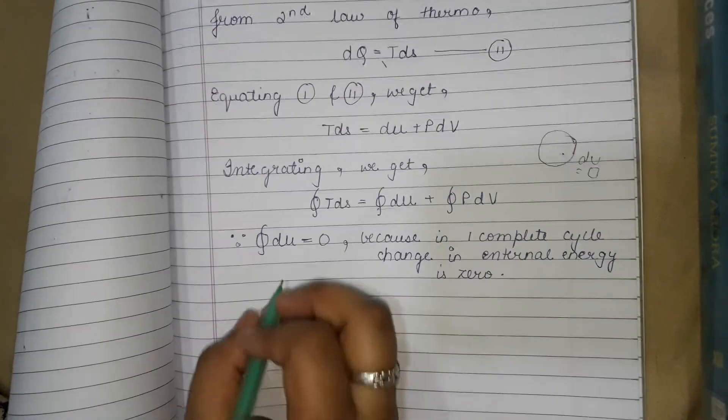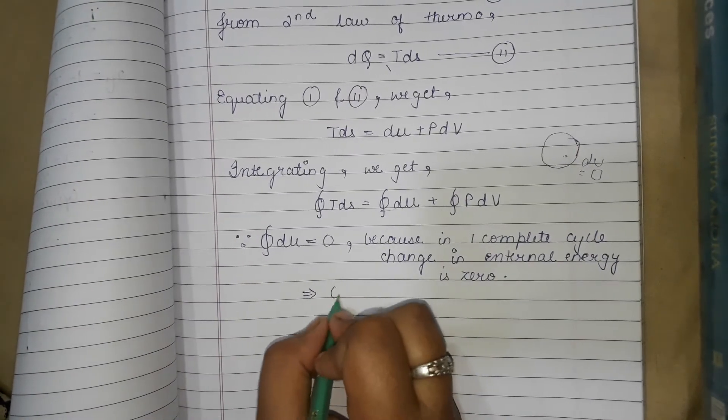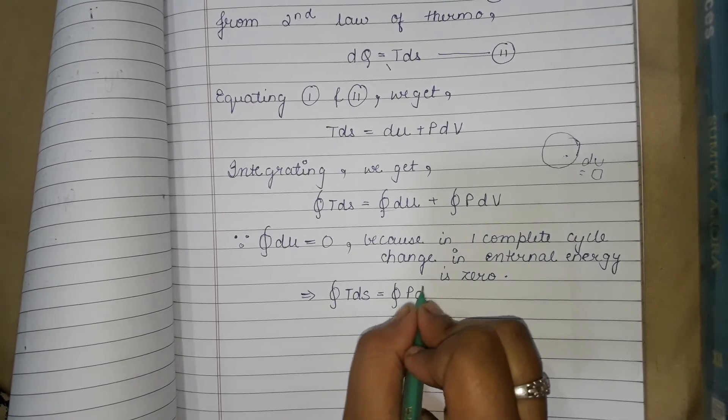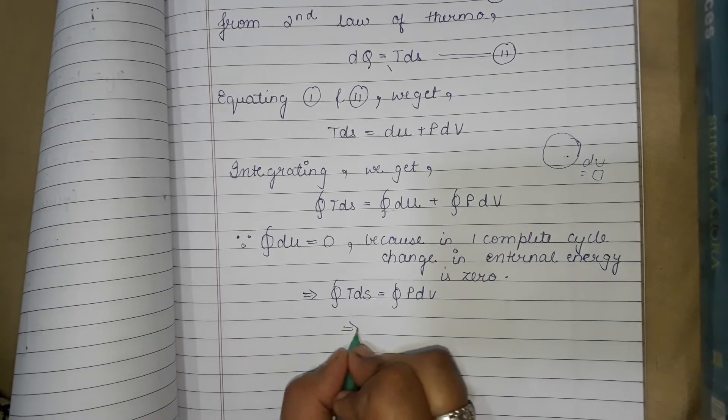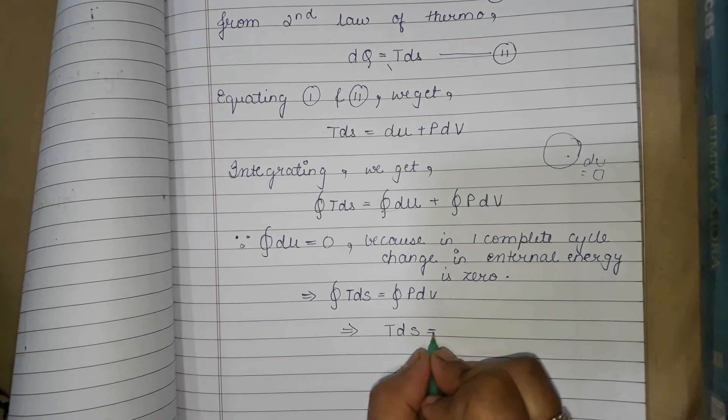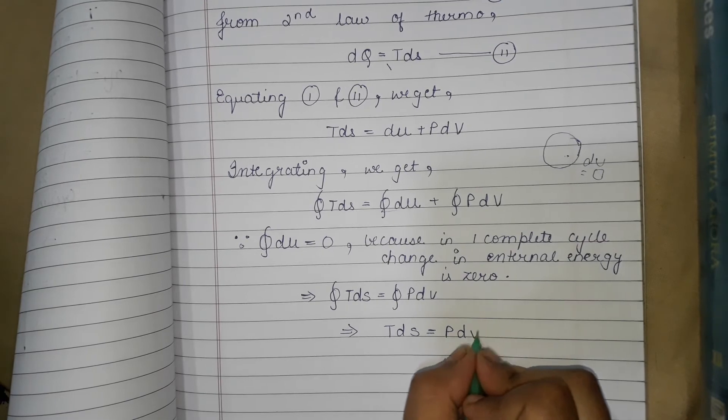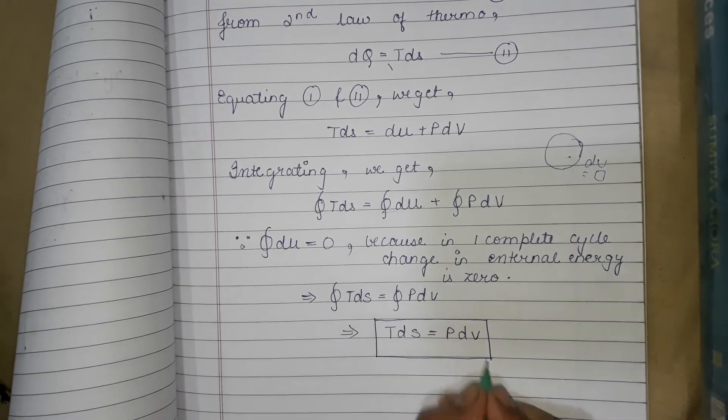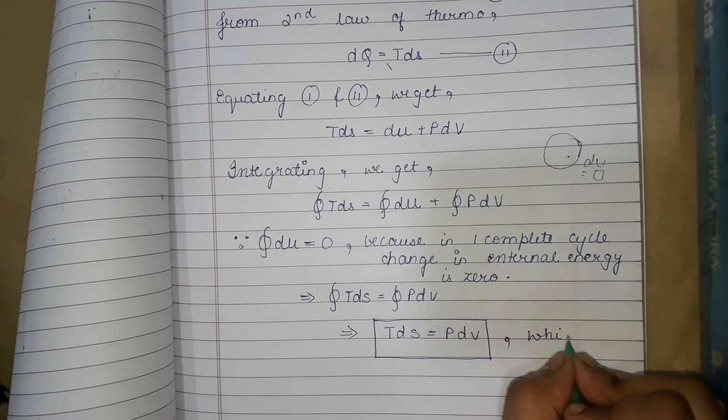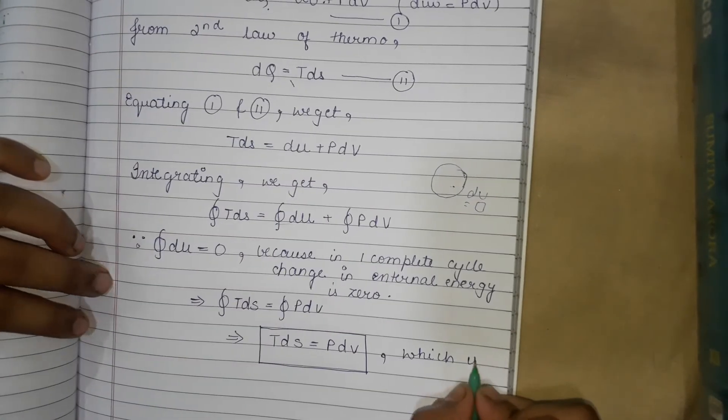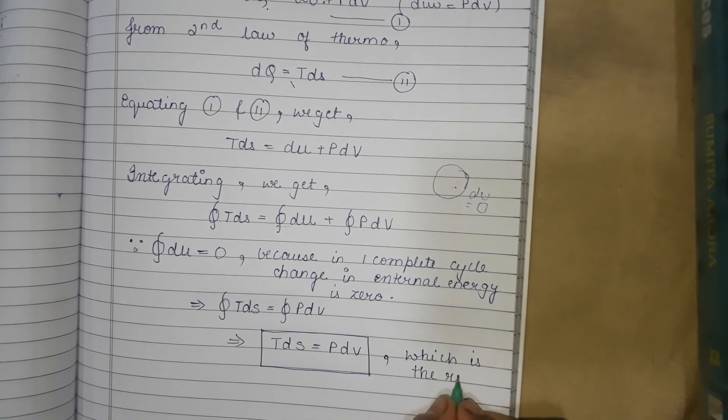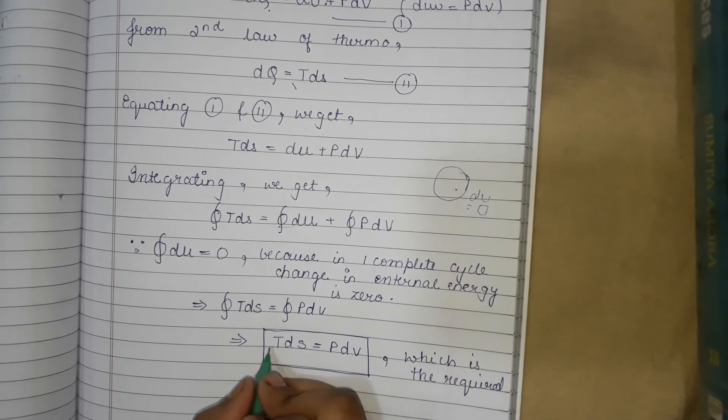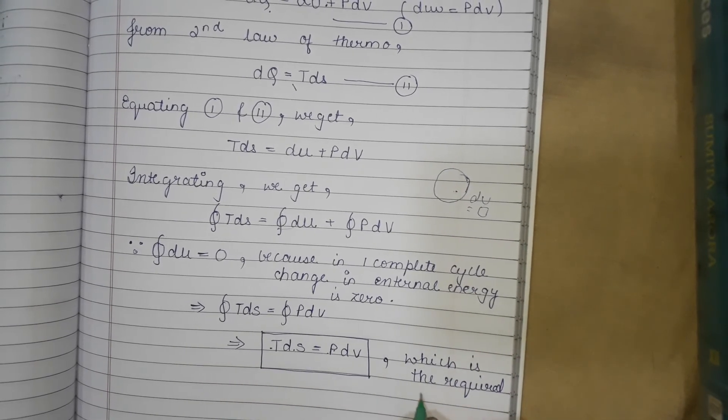So we get TdS is equal to PdV, and this is our required equation. We have proved that TdS is equal to PdV.